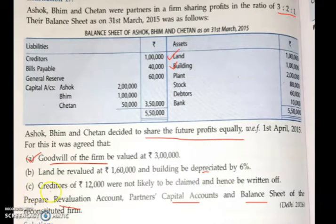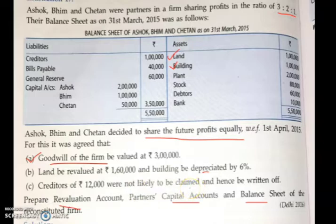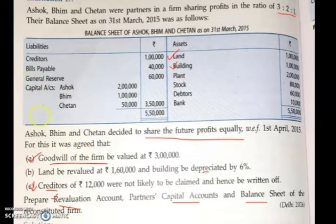Next, the third item: creditors of Rs. 12,000 were not likely to be claimed and hence to be written off. So, there is a creditor to whom you are supposed to give 12,000 — it is your liability — but you are telling that you are not supposed to give that amount. So your creditor decreases, meaning your liability decreases. This effect you have to show in the revaluation account. Whatever change is there in asset or liability of the firm, that will be shown in the revaluation account before reconstitution. The effect of the revaluation account — the profit or loss — will be shared among the partners in their old profit sharing ratio.